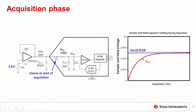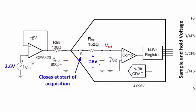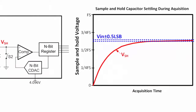A SAR data converter conversion cycle can be broken into two different phases: the acquisition phase and the conversion phase. During the acquisition phase, the external driving circuit charges the converter's internal sample-and-hold capacitor to a voltage equal to the amplifier's output voltage. Switch S1 is closed at the beginning of the acquisition phase, and opens at the end when the conversion process starts. The plot at the right shows the sample-and-hold voltage as it charges to the target voltage during the acquisition period.